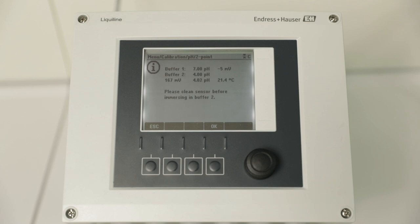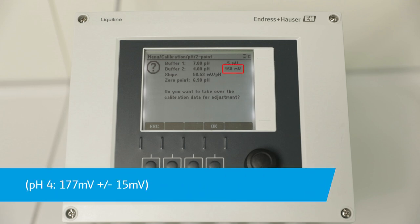Wait around one minute. Confirm second buffer with OK. The instrument waits for a stable measurement value again. If this is given, the value is taken over automatically. Check the display raw value. For a buffer with pH 4, it should be around 177 mV plus or minus 15 mV.